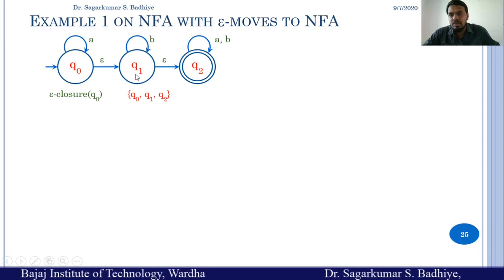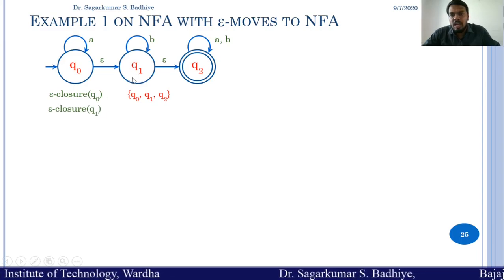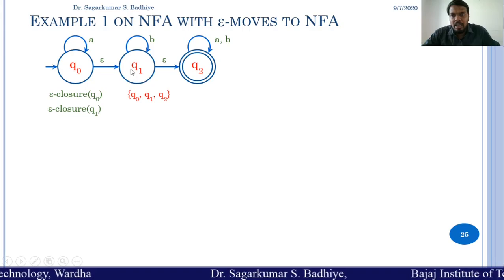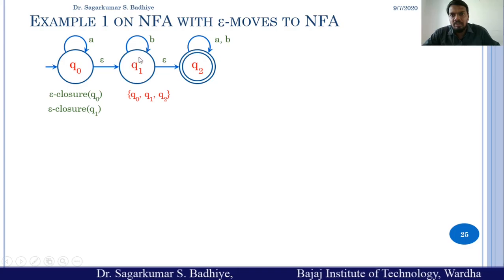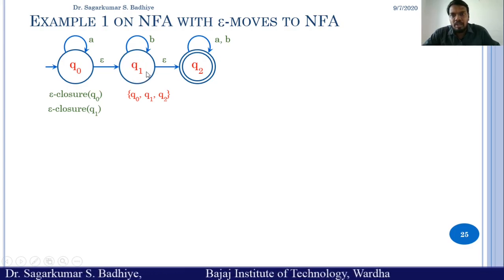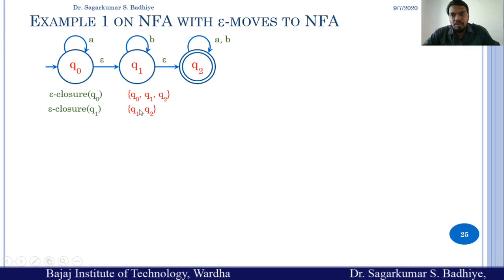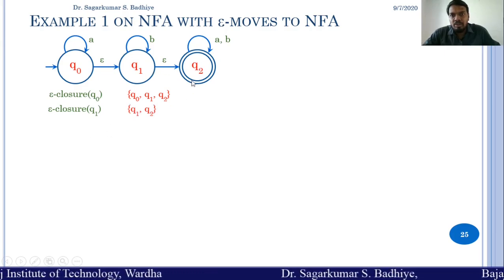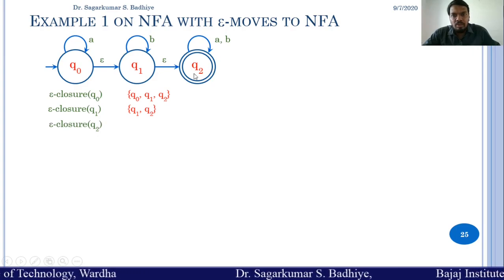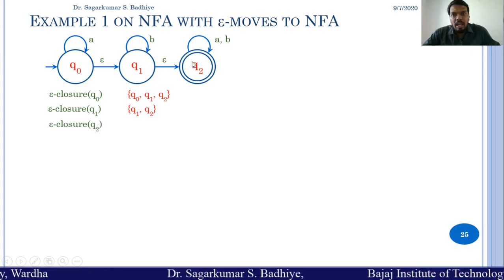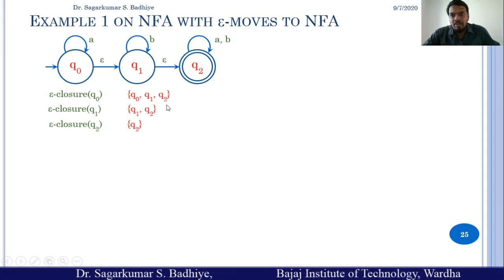Computing epsilon closure of q1: epsilon closure of q1 will be q1 itself, as there is no input needed to go from a state to itself. There is a transition from q1 on epsilon to q2, so epsilon closure of q1 consists of q1 and q2. Similarly, epsilon closure of q2 consists of q2 only, as there is no other epsilon transition from q2.